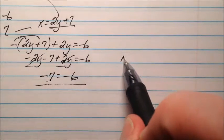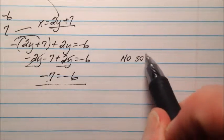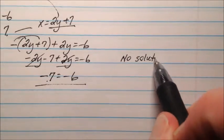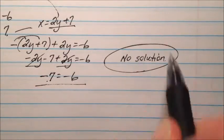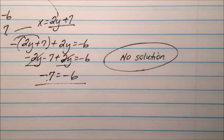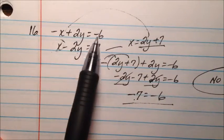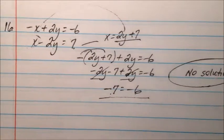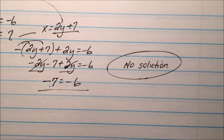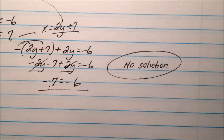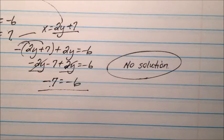All of our variables canceled out and we were left with a false statement — negative 7 does not equal negative 6 — so there is no solution. What this means is that these two lines are parallel: they have the same slope but different y-intercepts, meaning they never intersect. They're not the same line; they never touch. So if we were going to classify that, we would say this system is inconsistent.